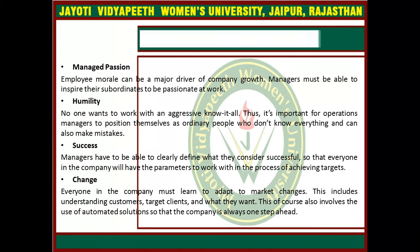The next is the humility. No one wants to work with an aggressive know-it-all. It's important for operations managers to position themselves as ordinary people who don't know everything and can also make mistakes. Then next is the success. Managers have to be able to clearly define what they consider successful so that everyone in the company will have the parameters to work in the process of achieving targets. Success basically totally depends on the outcomes, which are the actual targets that the company's success depends on.